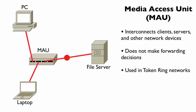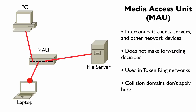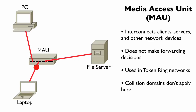When we discussed a hub, we talked about the concept of a collision and the fact that we had a single collision domain. With token ring, with token passing, a device's access to the media is more deterministic. When it's your turn, when you receive the token, it's your turn to transmit on the network. As a result, there's not the issue of collisions that we had with a hub, so there's no collision domain to consider.